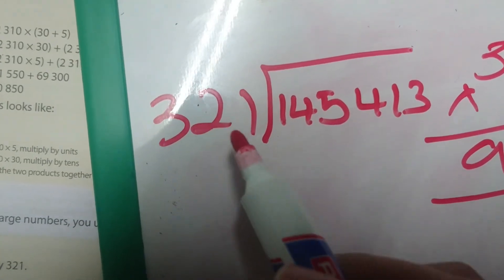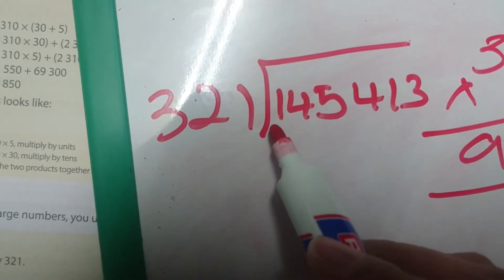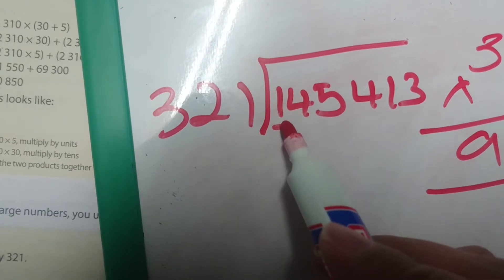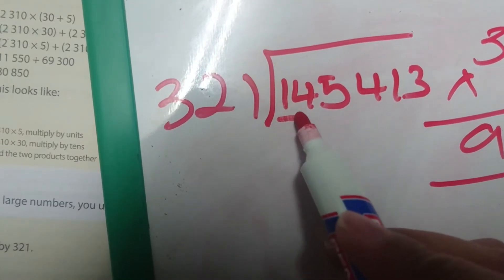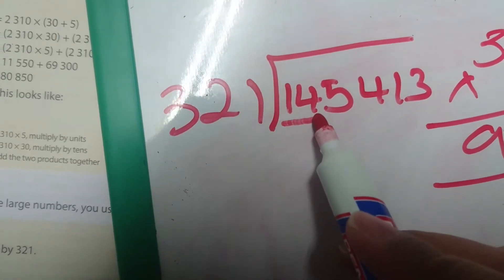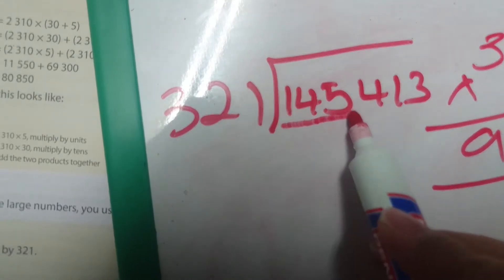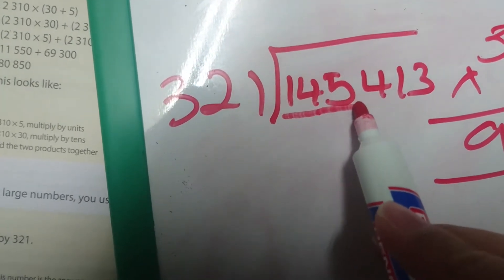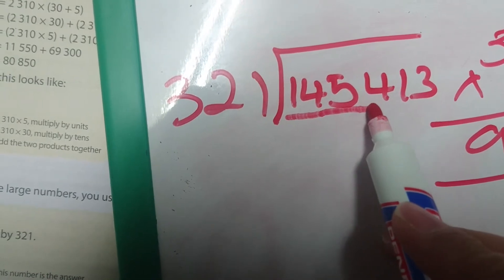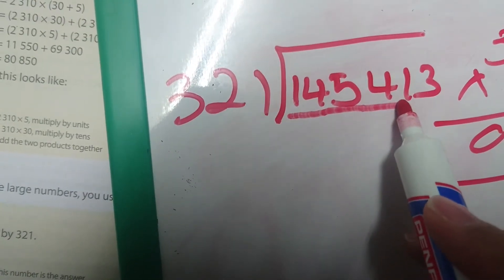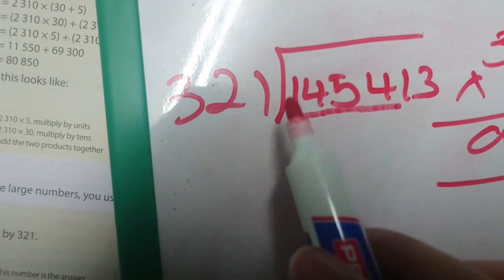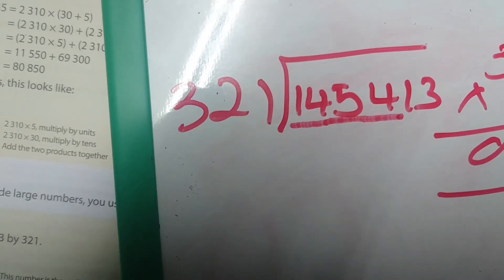So we look at 321 and we say how many times can it go into 1? It is bigger than 1, so it cannot go into 1. How many times can it go into 14? It cannot. How many times can it go into 145? It cannot because the number is too small. How many times can it go into 1,454? It can go into that number. Let's see how many times.